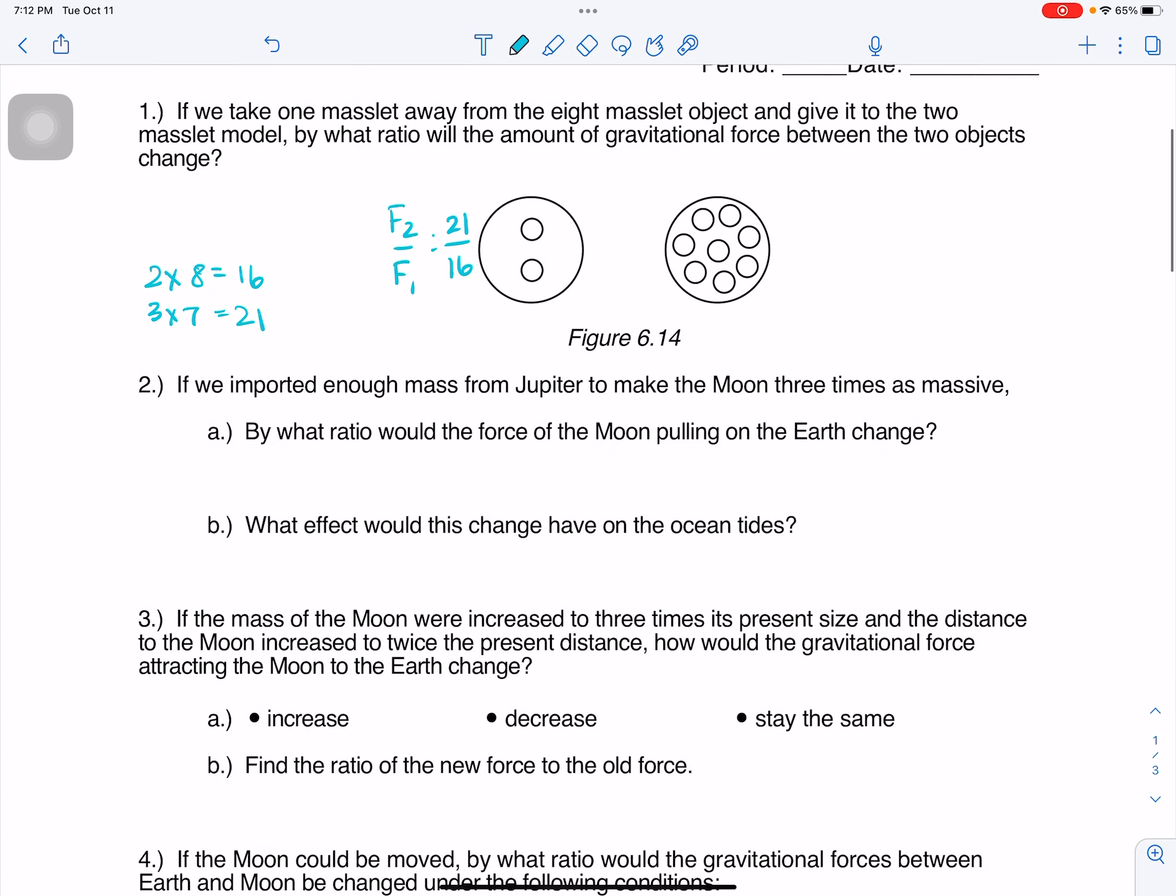Alright, if we imported enough mass from Jupiter to make the moon 3 times as massive, by what ratio would the force of the moon pulling on the Earth change? So the force of gravity is equal to G mass of the Earth, mass of the moon, over radius of the Earth-moon squared. So if m is now 3 times bigger, then I would put like a 3 right there, and so the force would be 3 times bigger.